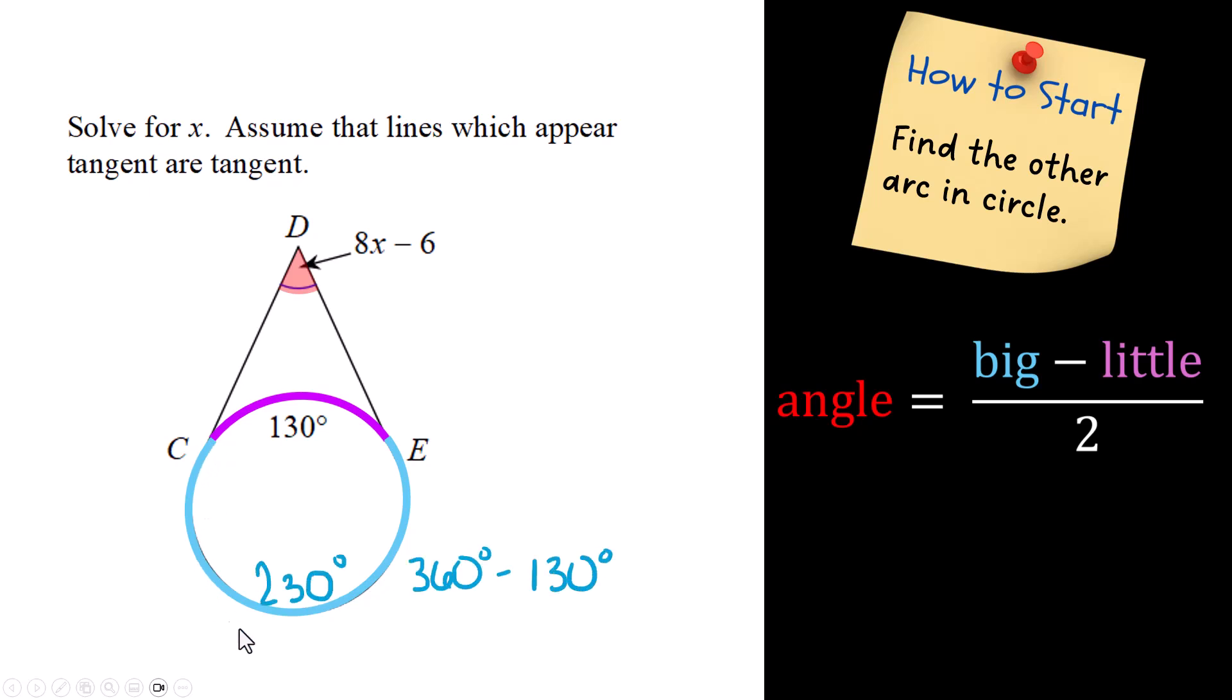So this blue part of the circle is 230. The other part is 130. This equation up here for this angle must equal the big arc, 230, minus the small arc, 130, divided by two. Let's do a little simplifying here. And 230 minus 130 is 100, and 100 divided by two is 50.